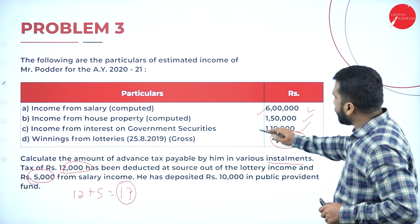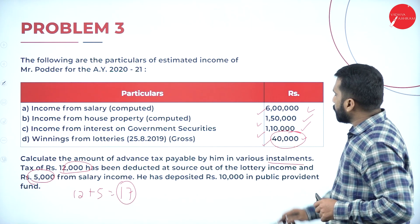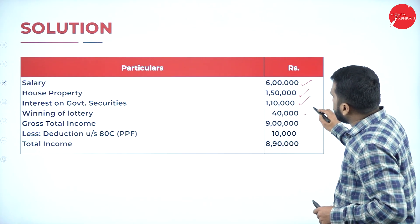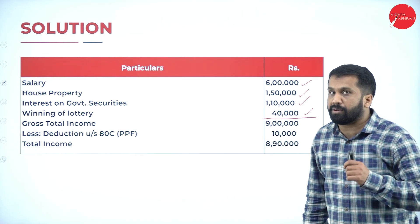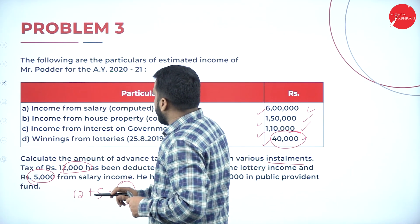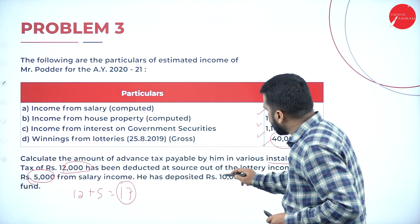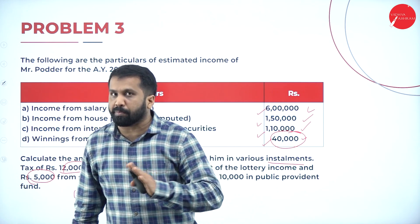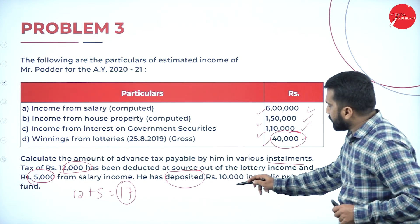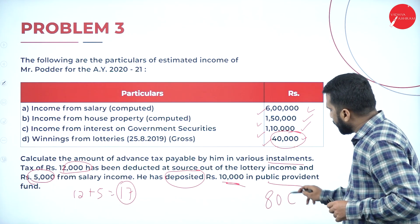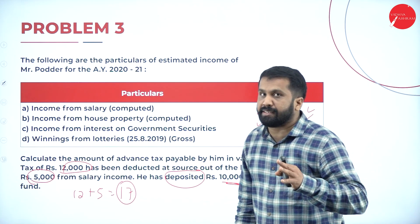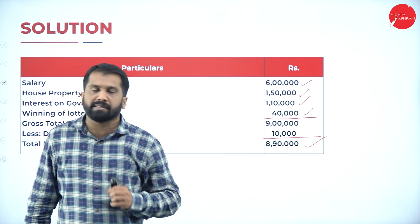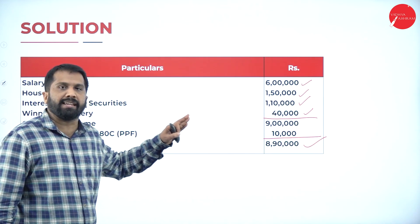Add up all incomes: six lakh plus one lakh fifty plus one lakh ten thousand plus forty thousand. The total comes to nine lakh. Now, he deposited ten thousand for Public Provident Fund - that is an 80C deduction, not income. We are calculating tax only on income, not on payments. So subtract ten thousand; your net taxable income is eight lakh ninety thousand.